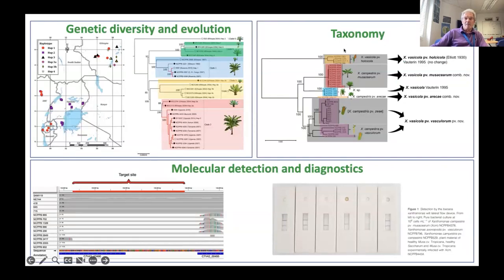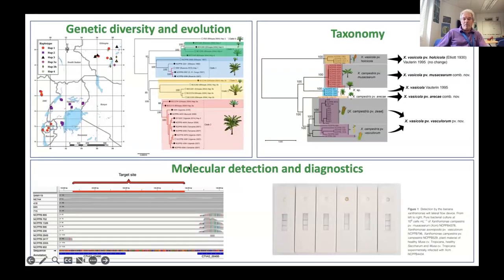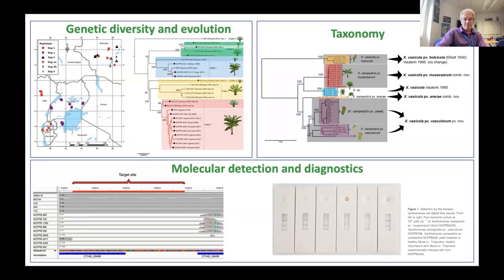This is simply an example of the different applications you can use genomics for: looking at the evolution of the pathogen, looking at taxonomy, reclassifying the pathogens, and what a lot of people are interested in — molecular detection and diagnostics. We did this and developed a LAMP assay for banana Xanthomonas a number of years ago, in collaboration with Fera.